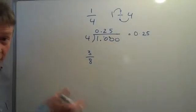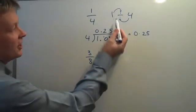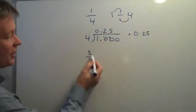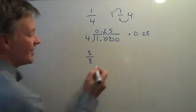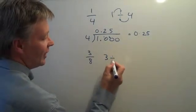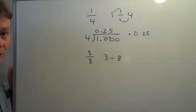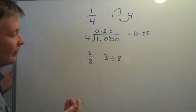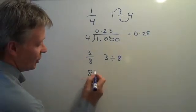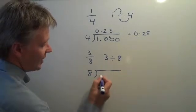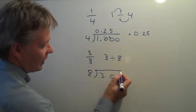So we can do it in exactly the same way. I'm going to use the principle of division, and I'm going to say that 3 over 8 is the same as 3 divided by 8. And what I'm going to do is rewrite that as short division as 8 into 3.000.